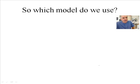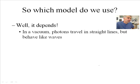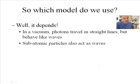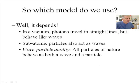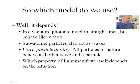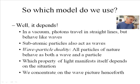Which model are we going to use? Are we going to use the wave model or the particle model? It all depends. In a vacuum, photons travel in straight lines. But they behave like waves. Subatomic particles also act as waves. That's electrons, protons, and neutrons. So, we call this the wave-particle duality. The duality of particles of nature behave as both a wave and a particle. Here's the key, though. Which property of light manifests itself depends upon the situation. But, in astronomy, we will primarily concentrate on the wave nature of light, because that teaches us the most about stars and planets and things.